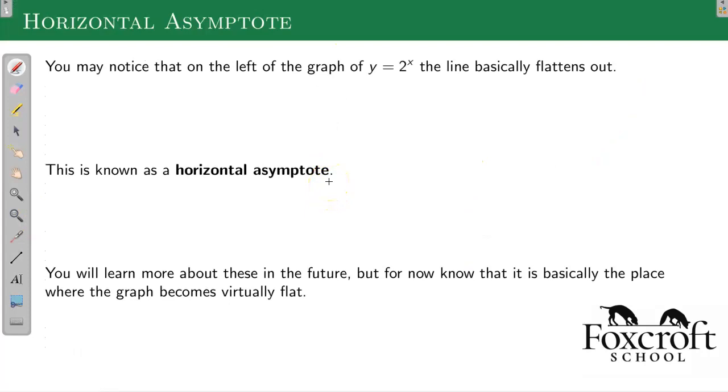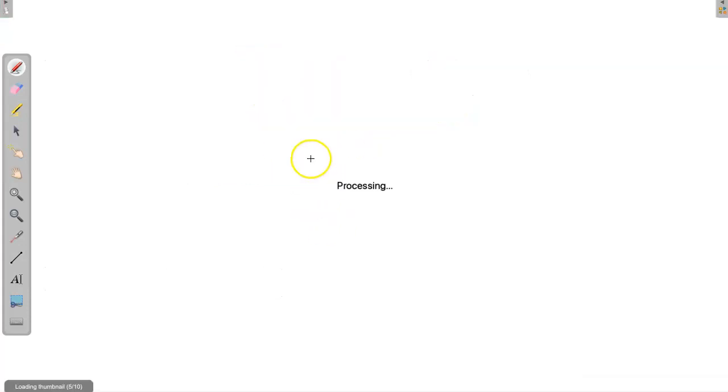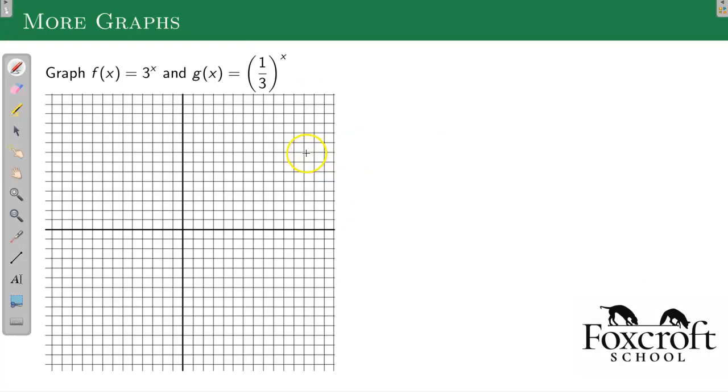One important thing with exponentials is this thing called a horizontal asymptote. If you notice on the left side of the graph, it's basically flat for a while and then it has that turn up. This flat part is called a horizontal asymptote. This has become really important in more advanced math. For right now, I just want you to know it's called a horizontal asymptote. It's going to be really important for when we're graphing exponentials because we need to know where does that leveling off part happen. So we're going to start putting these asymptotes on our graph. And all it means is that your graph is becoming flat.